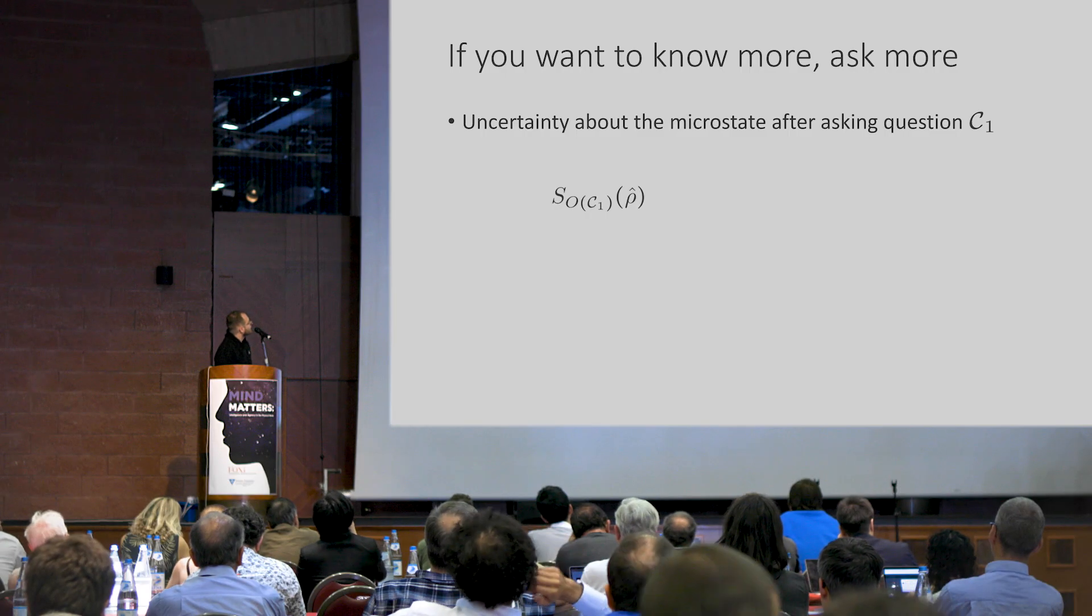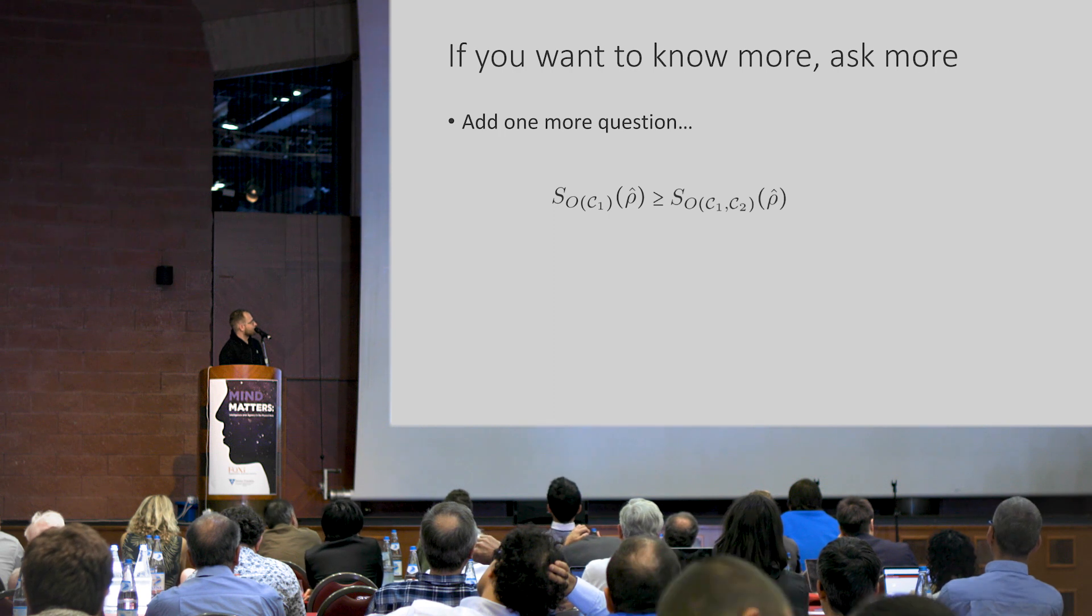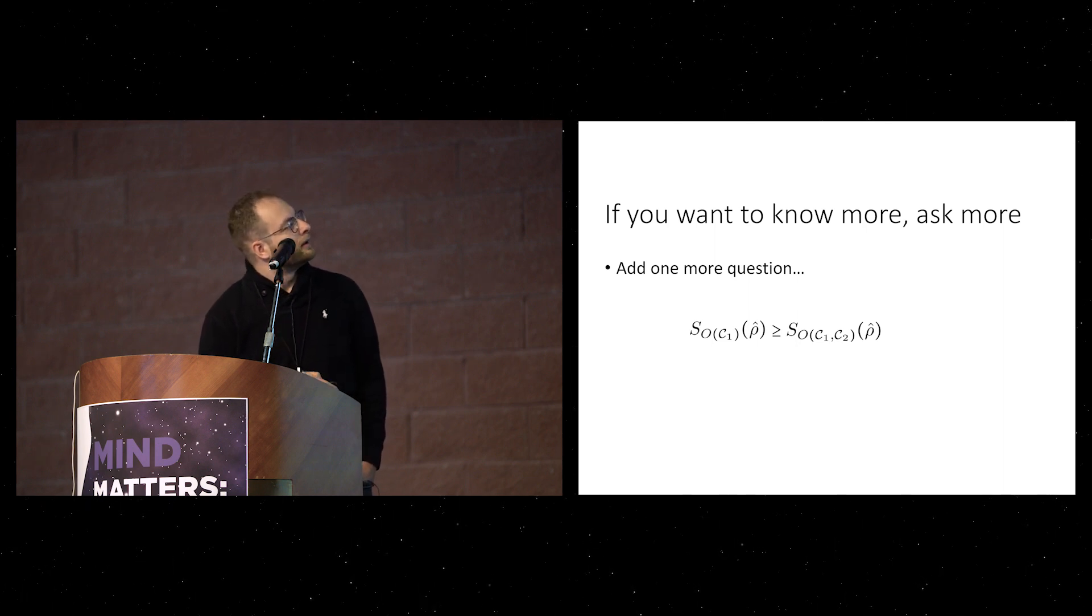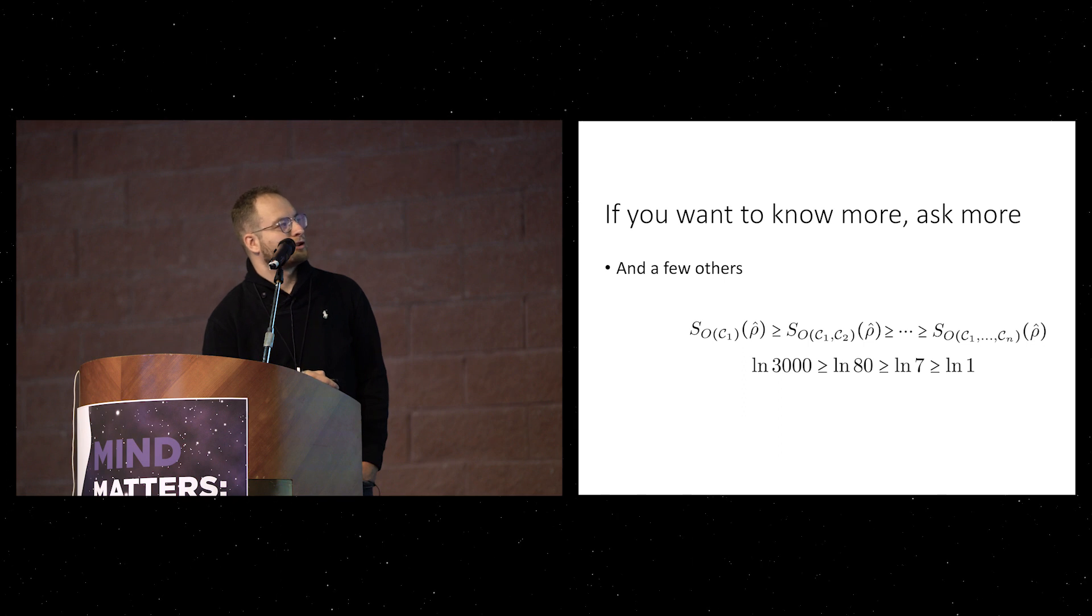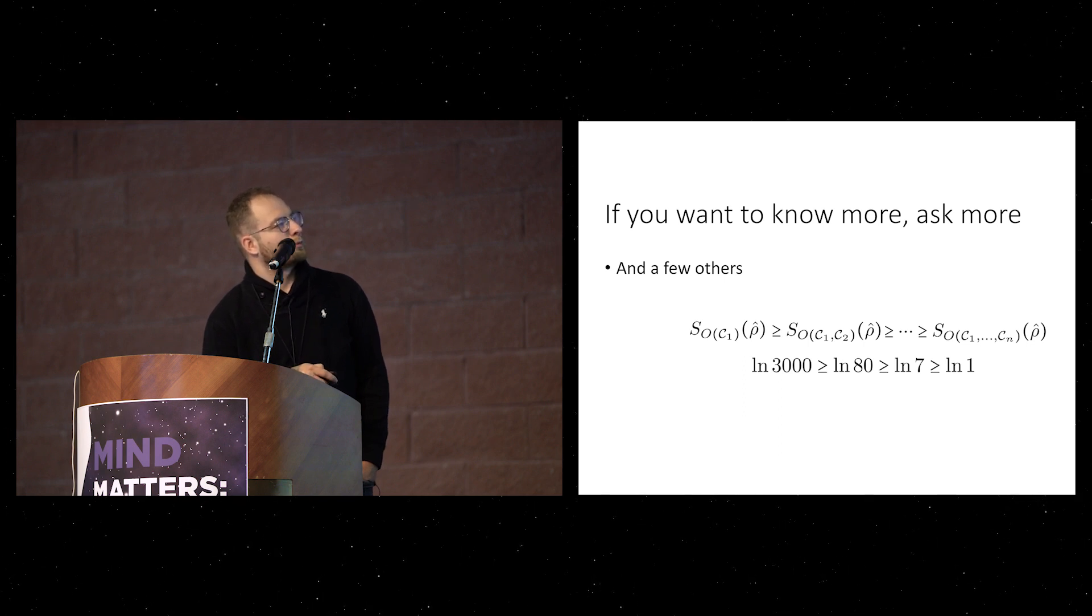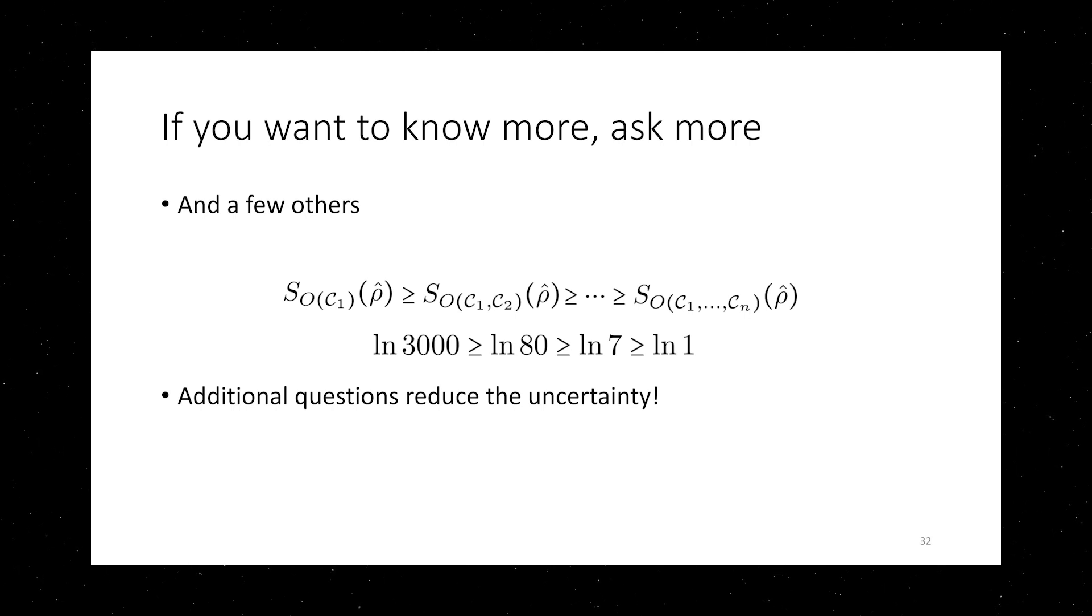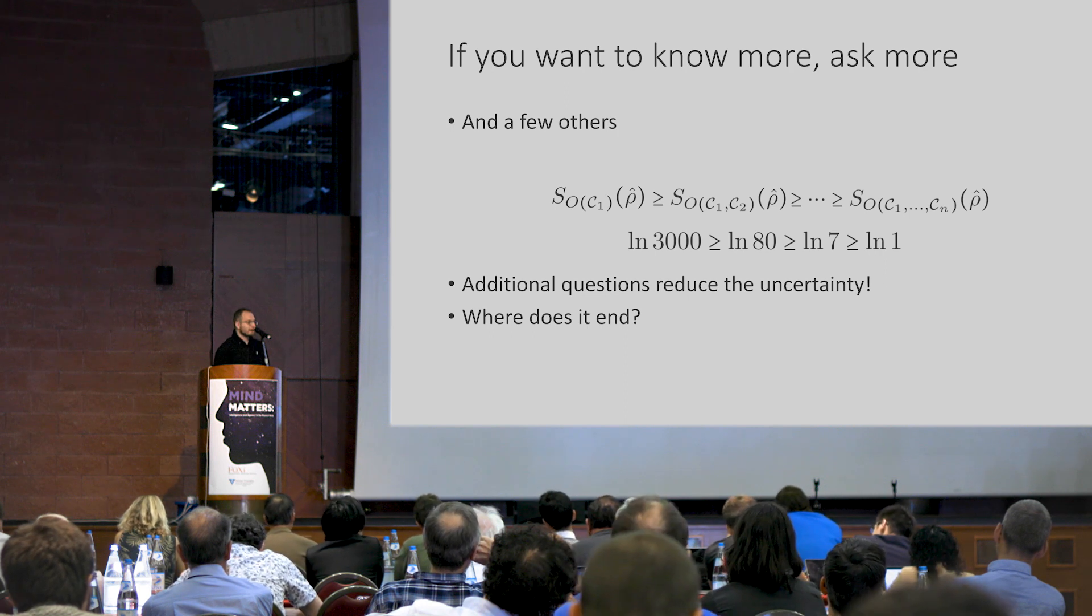So let me tell you about some properties which do not necessarily are applicable only to that example I showed, but are more general. So let's say you start with some uncertainty you have about the microstate after asking question C1. If you ask another question, well, your uncertainty decreases, or to be more precise, at least it doesn't increase. And you can continue like that. In our example, I first asked, or you first asked whether it was a man, then which nationality was he, then what profession was he, and what was he known for? So, as we learned, additional questions reduce the uncertainty, which this is kind of a mathematical proof that if you want to know more, you just ask more, which I think is quite nice.